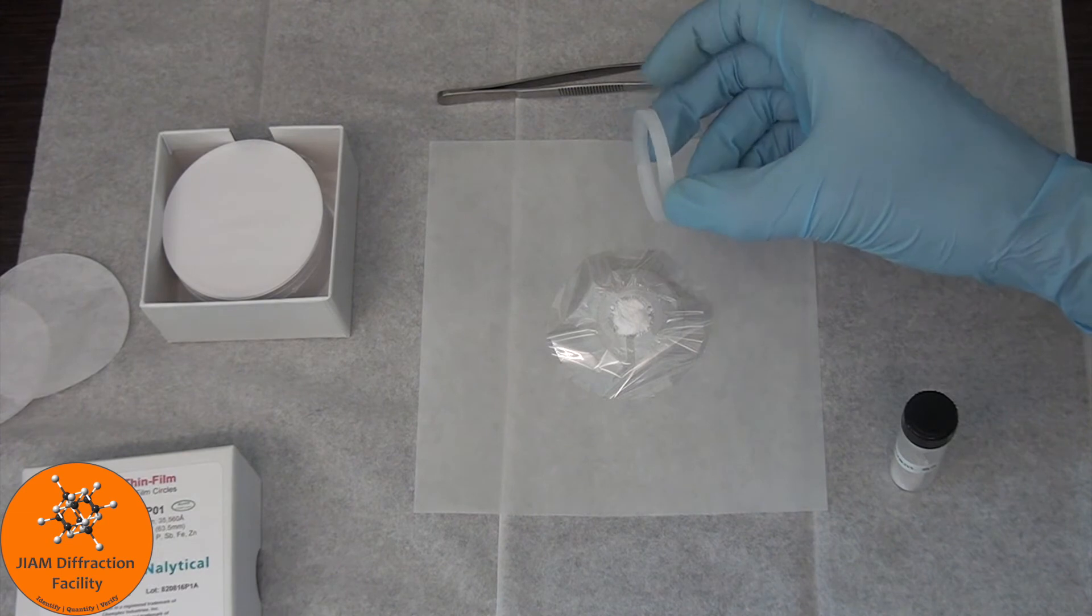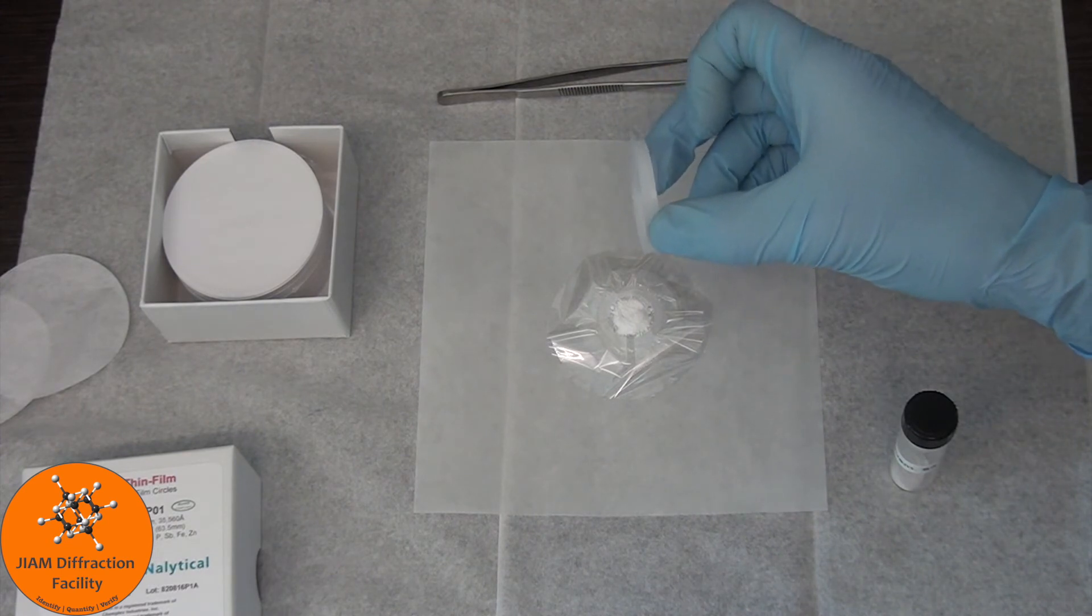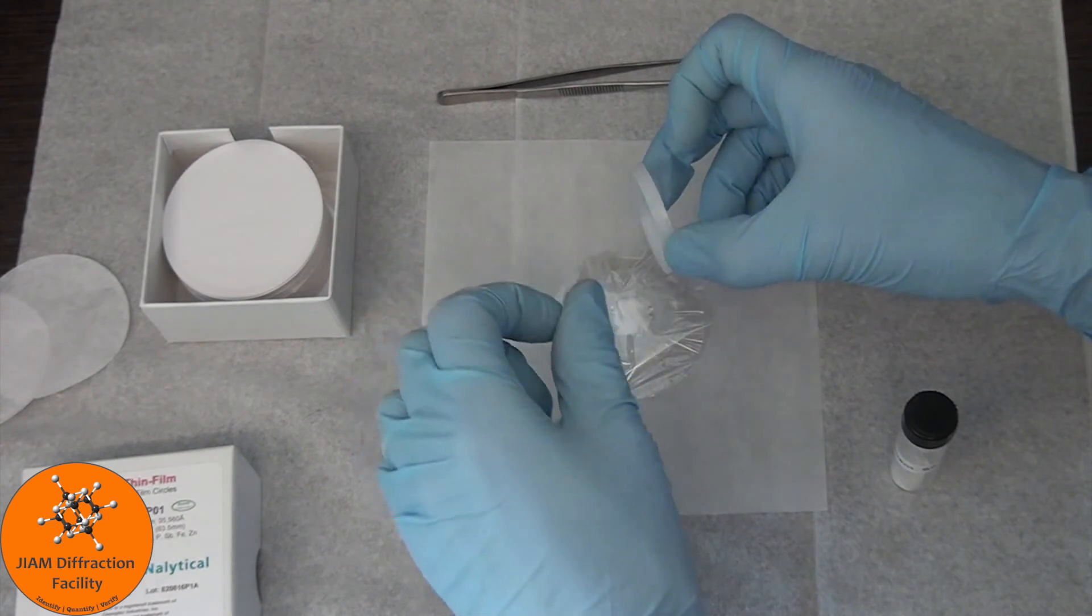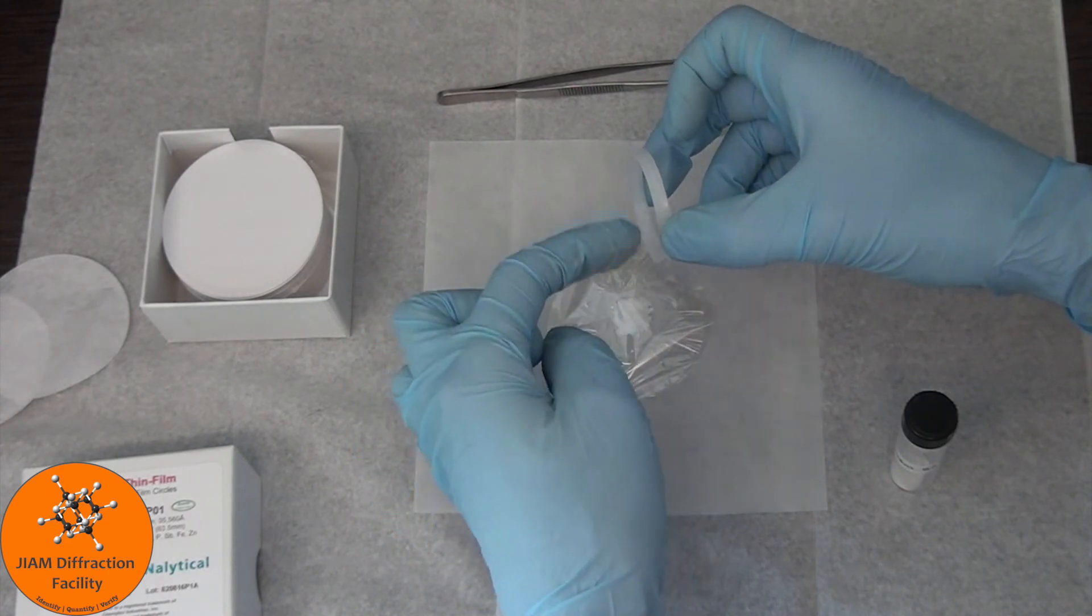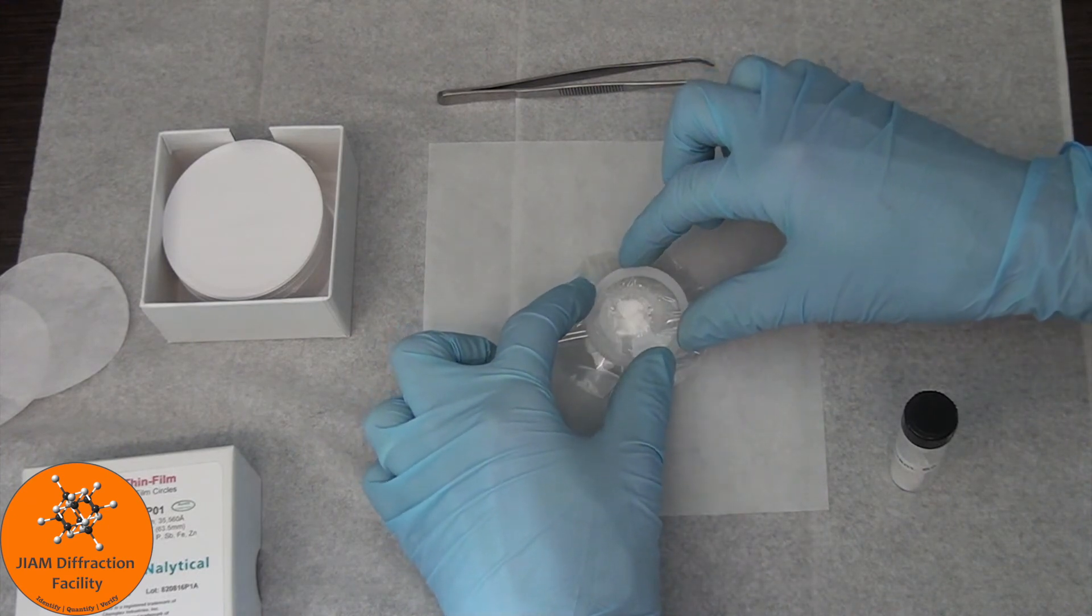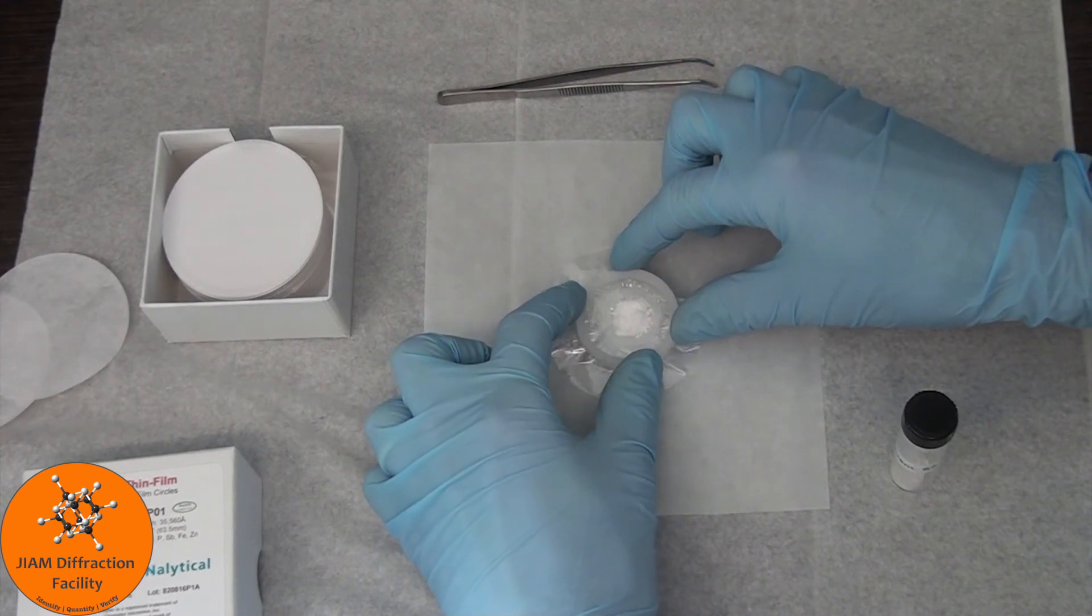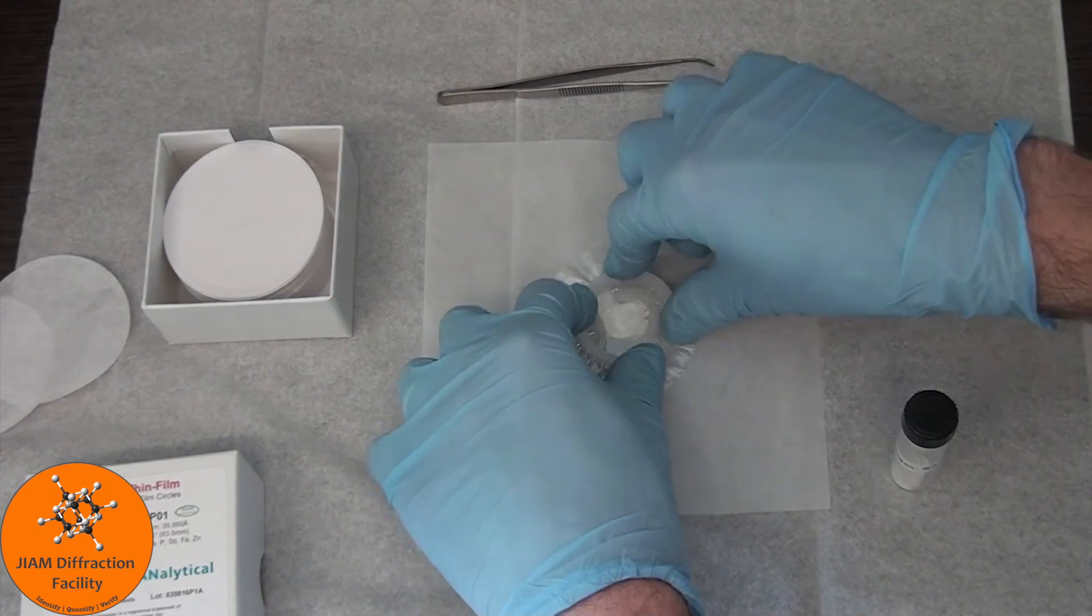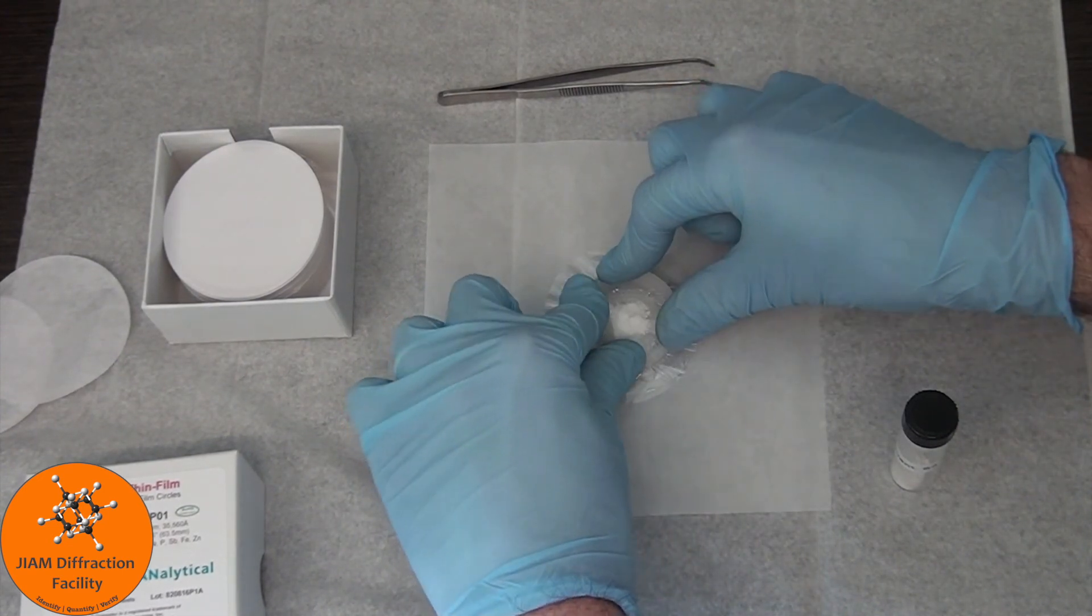Now this last piece, it might be difficult to see, but one side has a bigger opening than the other, so you want to pick the side that has the bigger opening and have that face down. And then that goes on top of the sample, and then you just press down, and it should lock it in place.